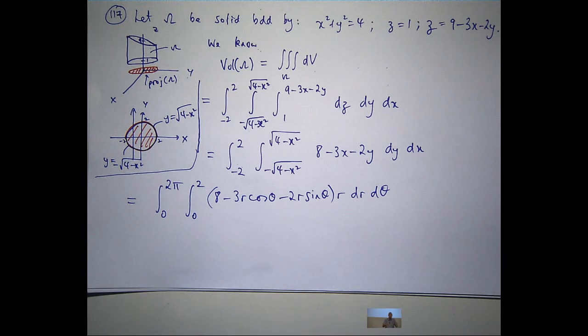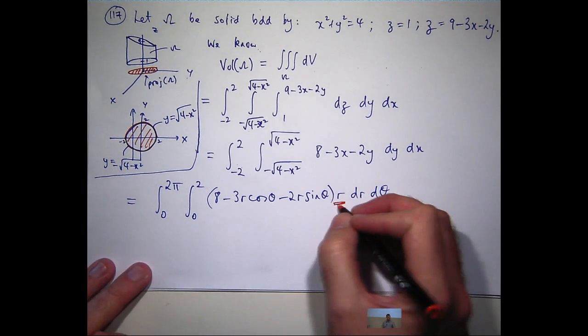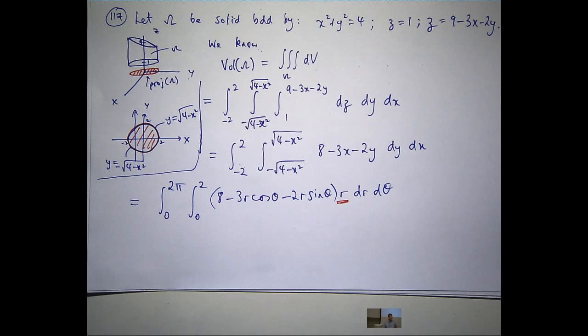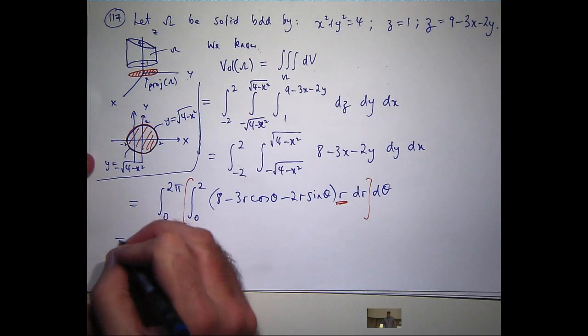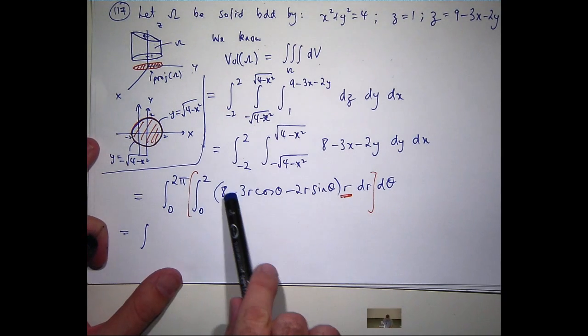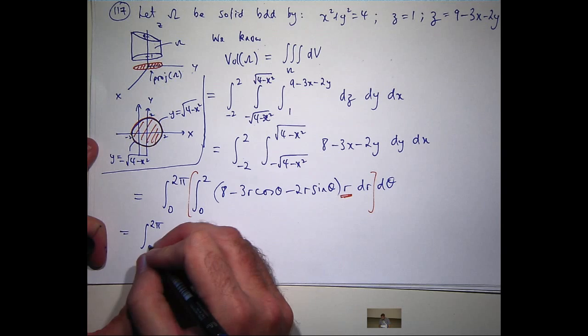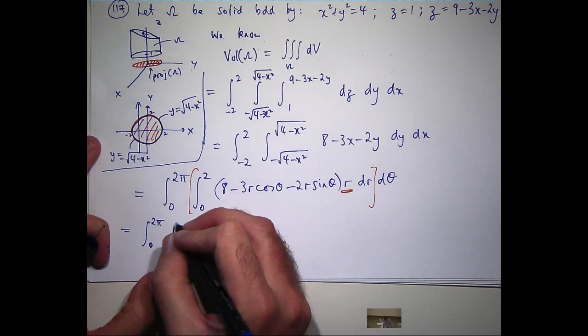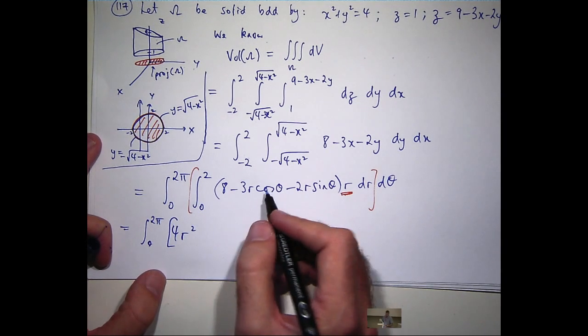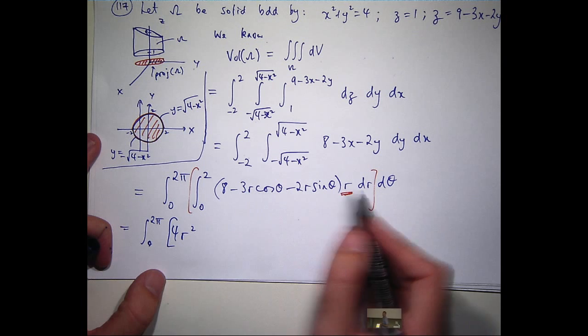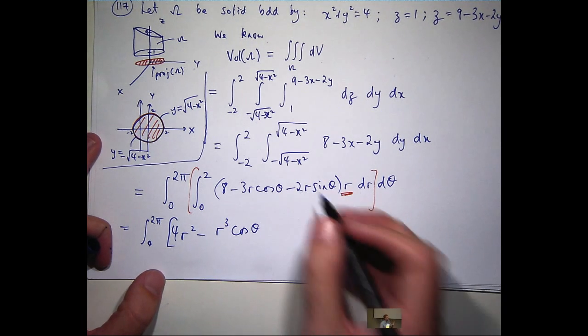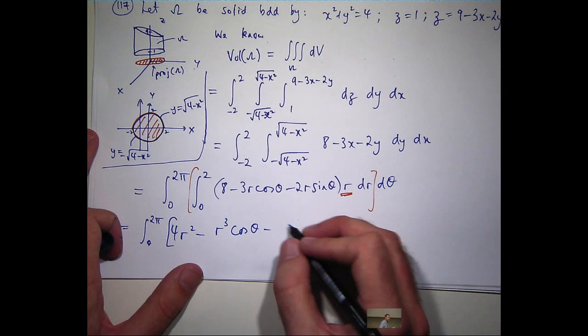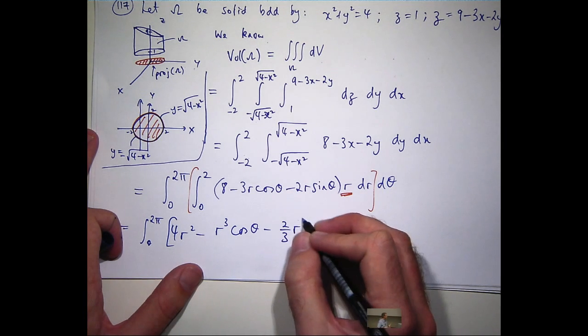Okay. Now, don't forget about the r here. Lots of students forget it. So let's, again, do the inside integral first and then outside integral. So when I multiply through here, I'm going to get 8r. When I integrate that, I'm going to get 4r squared. Over here, I'm going to get 3r squared. So I'm going to get r cubed. And over here, I'm going to get 2r squared.